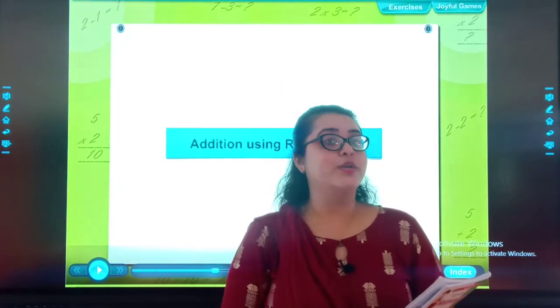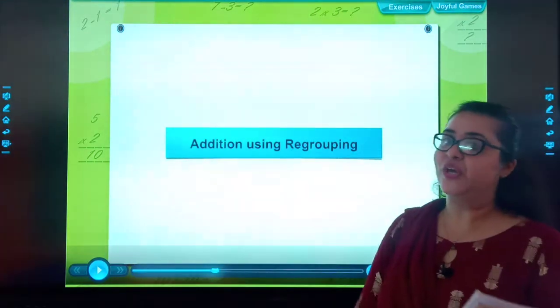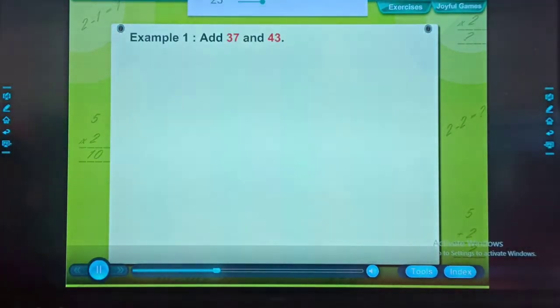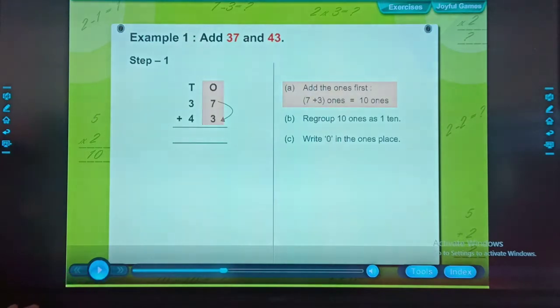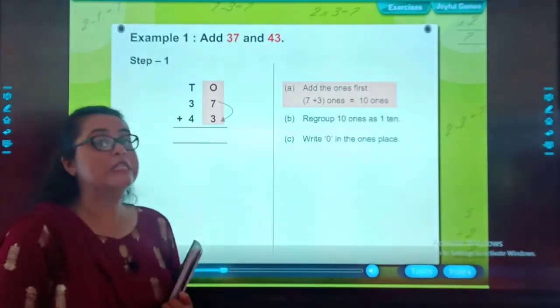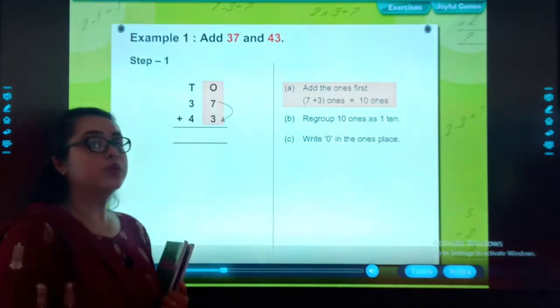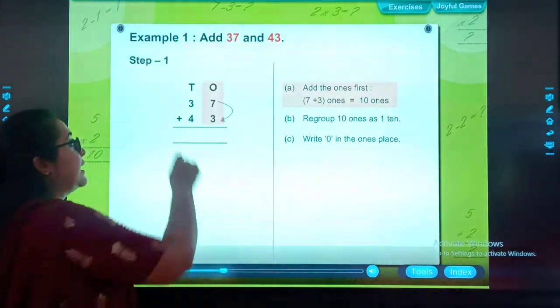Students, today we will discuss the topic that is addition using regrouping. Example 1: add 37 and 43. Step 1, add the ones first. 7 plus 3 ones, which is 10. Students, this is new for you. When we add two different numbers at the time, first of all, we will add the ones part. Then we will add the tens part.